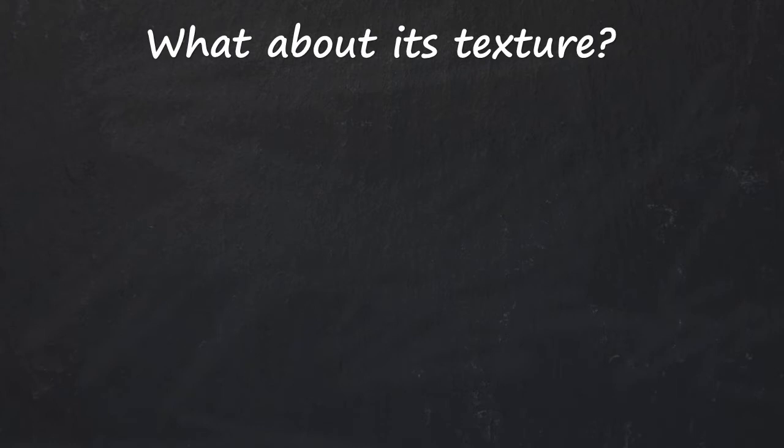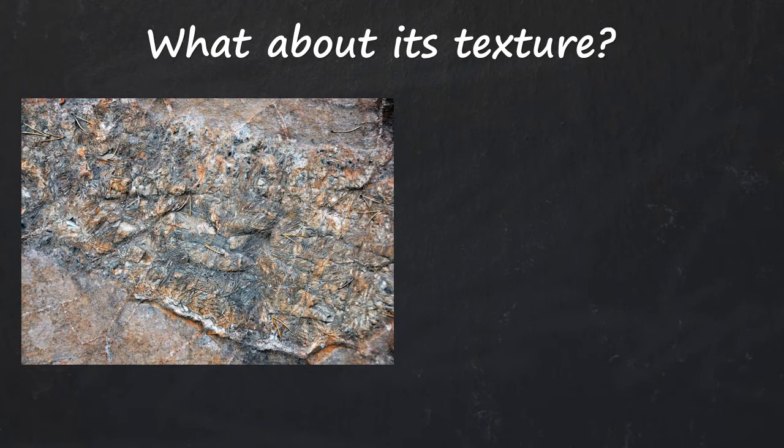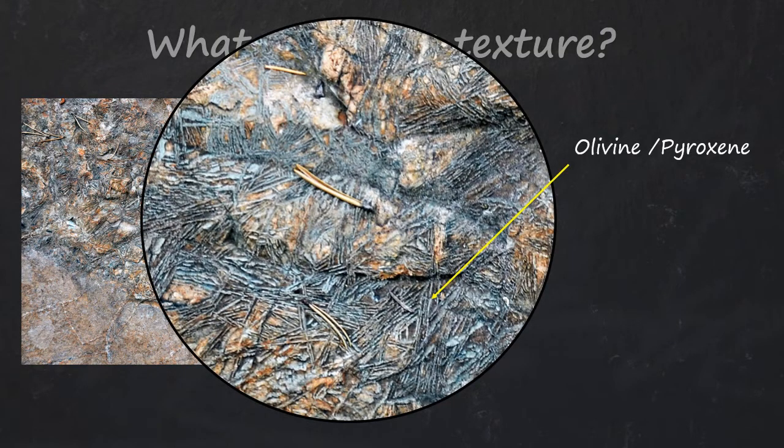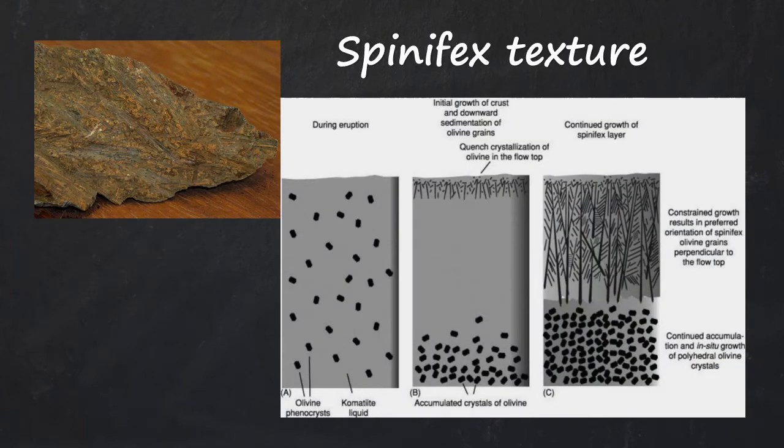Texture. Komatiite shows a distinct texture called a spinifex texture. It refers to the elongated platy blades or crystals of olivine. They could also be acicular needles of pyroxene. It's formed when highly mafic to ultramafic liquid undergoes relative rapid in-situ crystallization and grows extremely rapidly in low viscous magma by fast cooling. That's how we know Komatiites are erupted from sub-aerial lavas and not formed in plutons.